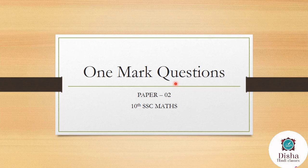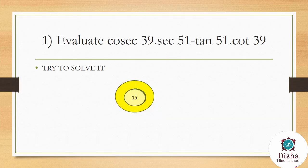Welcome back to Disha Classes. Today we are going to discuss one-mark questions from paper 2. We have completed part 1, so let's complete part 2 quickly. Here's the question: evaluate cosec 39 × sec 51 − tan 51 × cot 39.